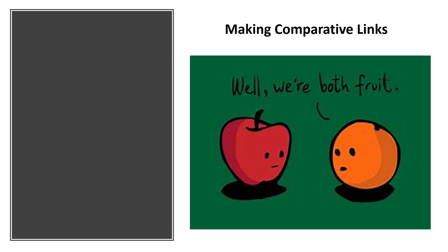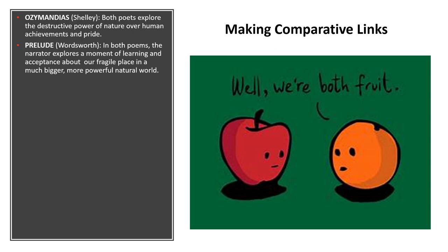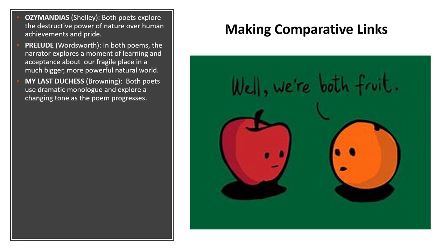Before I end, I want to talk about making comparative links, because in the exam you cannot talk about the poem in isolation — you have to link it with another poem from the collection. I've tried to pull out the most obvious links to give you a helping hand. 'Ozymandias' by Shelley: both poets explore the destructive power of nature over human achievements and pride — they work really nicely together. 'The Prelude' by Wordsworth: in both poems the narrator explores a moment where they learn and accept humans' fragile place in a much bigger, more powerful natural world.